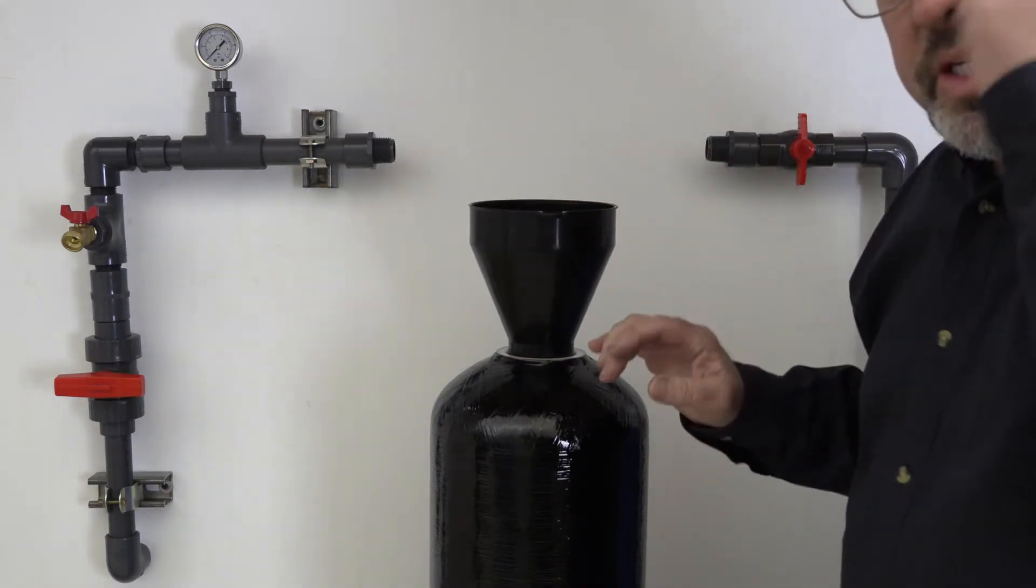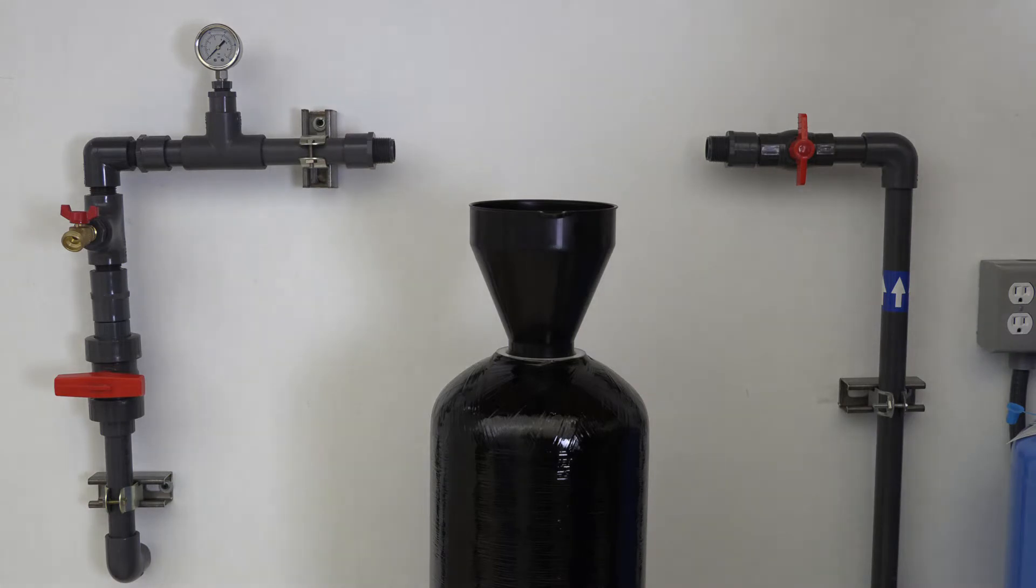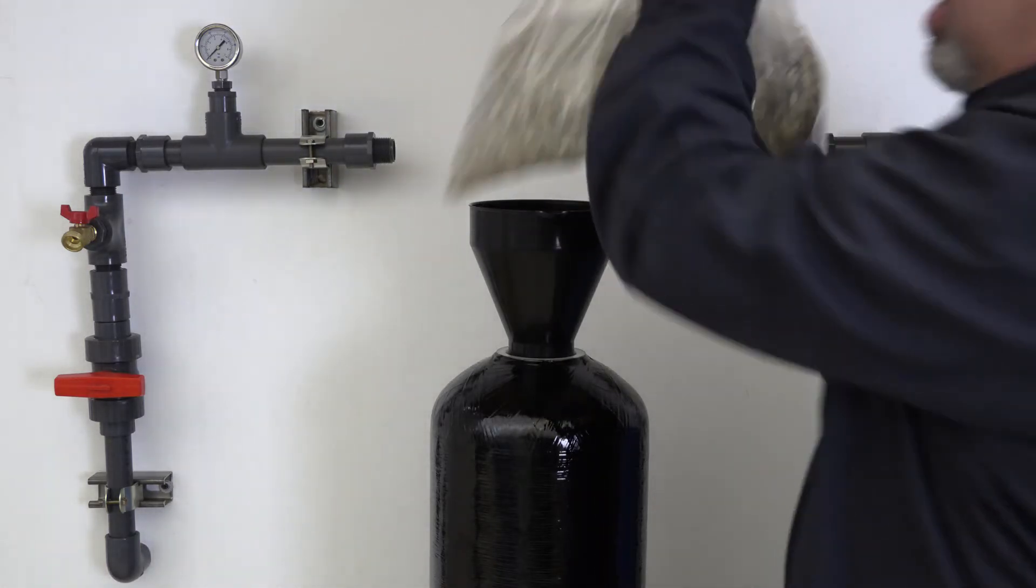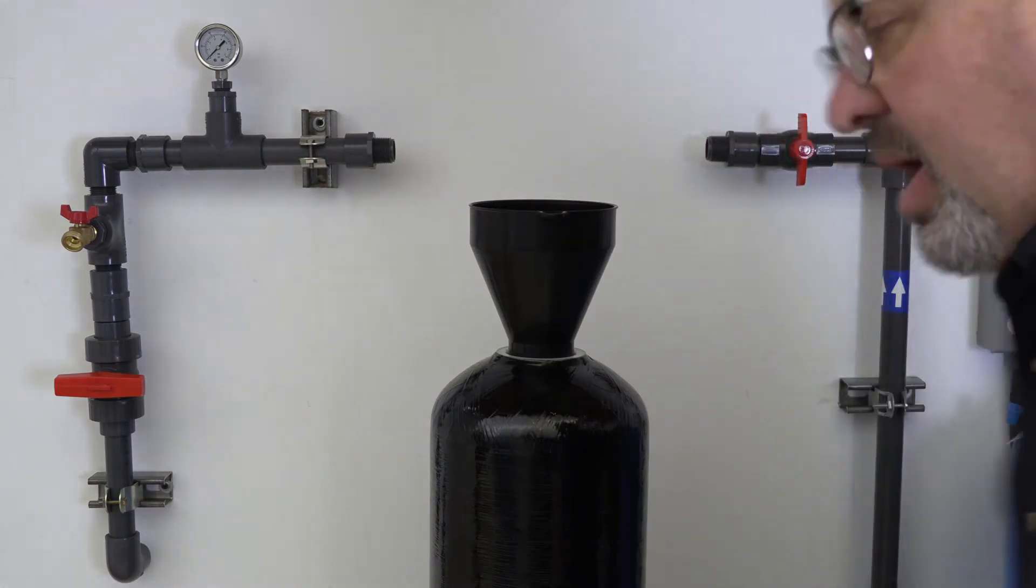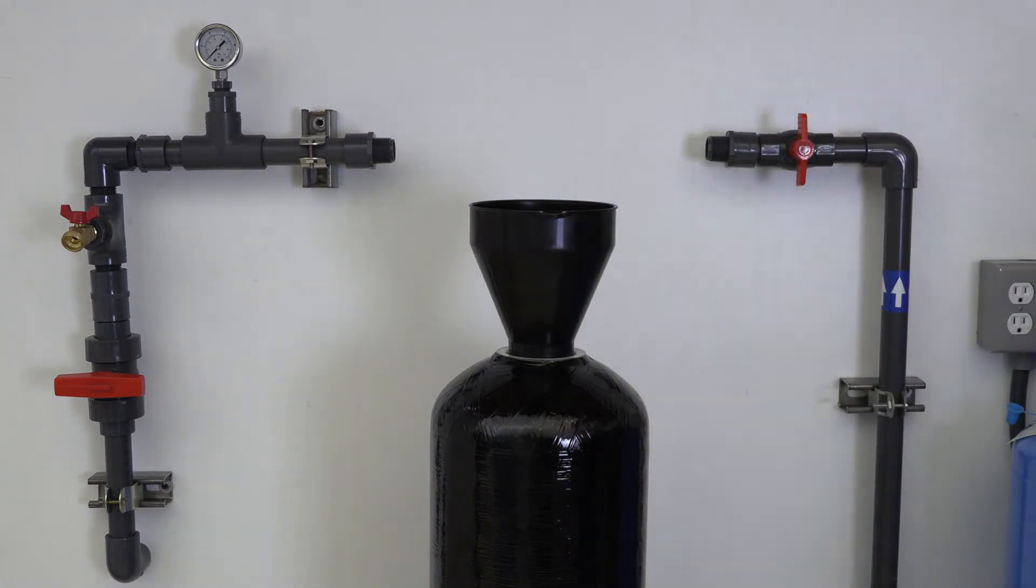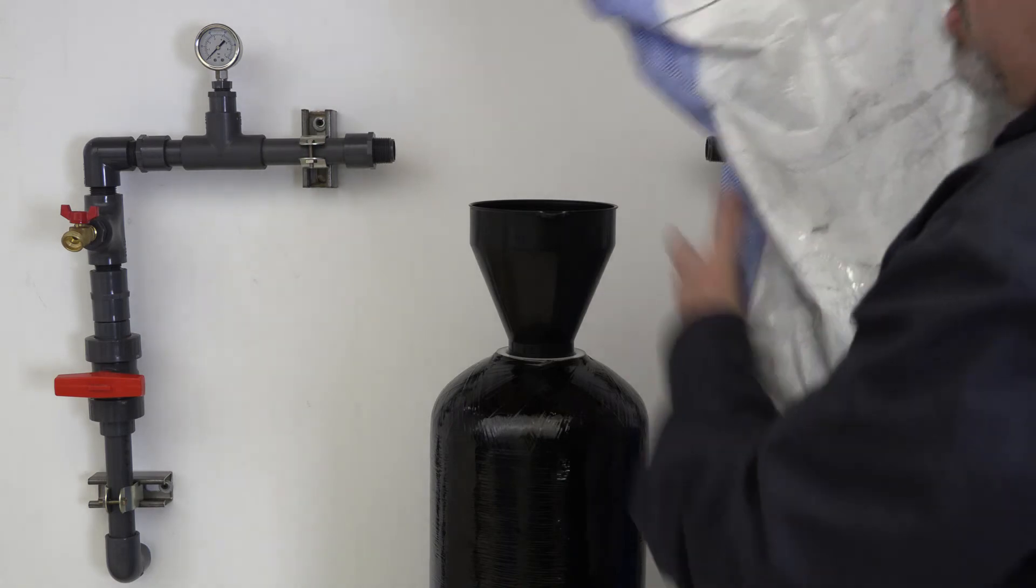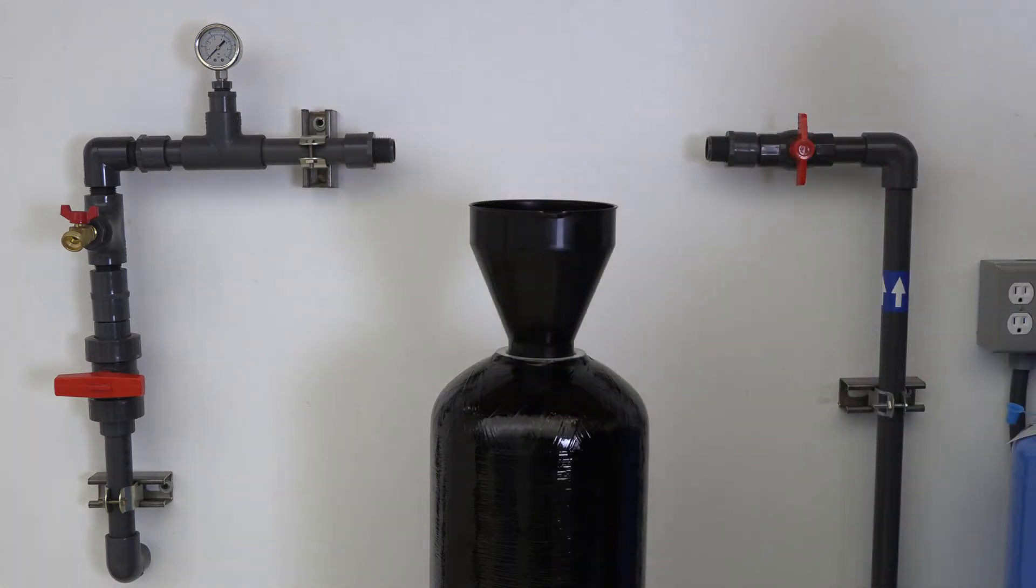Depending on the size system that you have, that determines how much media goes into the tank. All of our systems are pre-measured and weighed for the tank size. The first thing you want to do is pour all of your gravel in around the funnel so it seats into the bottom of the tank. You will then top that off with the carbon by pouring it into the funnel. You might want to wear a mask while you're doing that because this does produce a lot of dust.